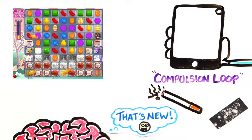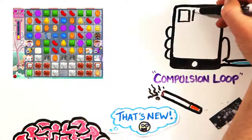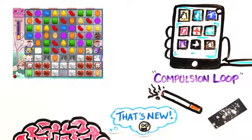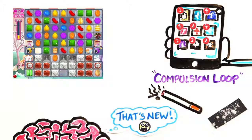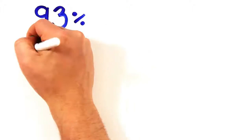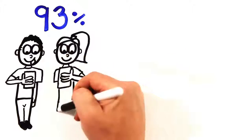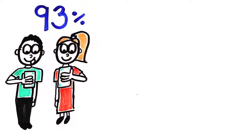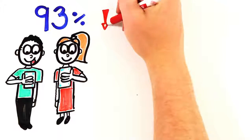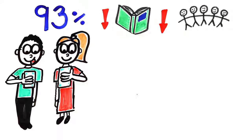Our brains are hardwired to make us novelty seeking, and this is why apps on our phones are designed to constantly provide us with new content, making them hard to put down. As a result, 93% of young people aged 18 to 29 report using their smartphone as a tool to avoid boredom, as opposed to other activities like reading a book or engaging with people around them.